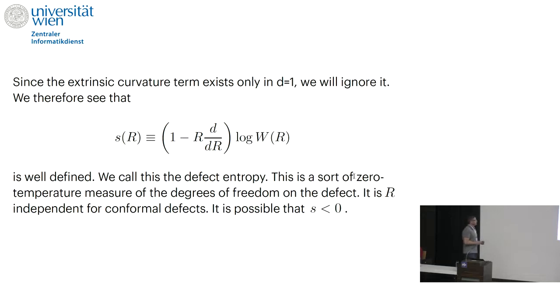This is an interesting scheme independent quantity, which we call the defect entropy. This defect entropy is some sort of count of how many degrees of freedom the impurity has got, but it can also be negative. So it could be that effectively an impurity has negative number of degrees of freedom, basically because it repels bulk excitations from it. There are examples where it's negative.